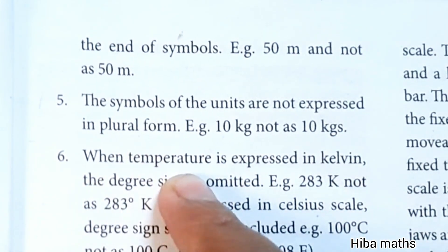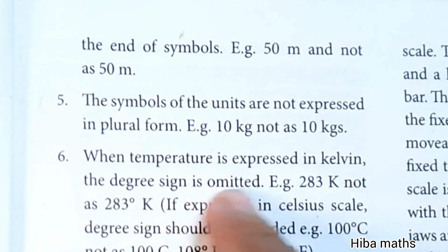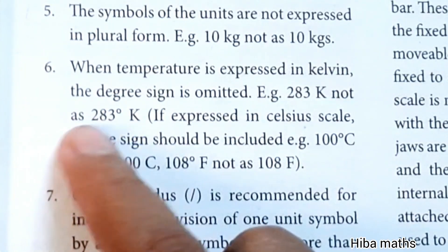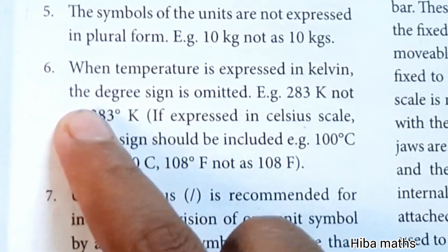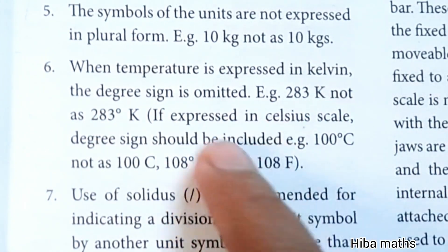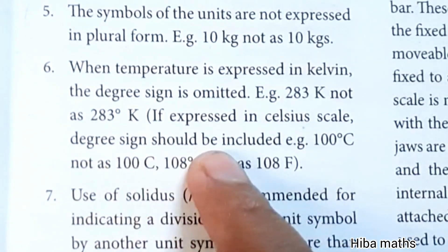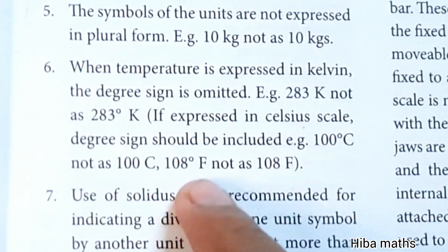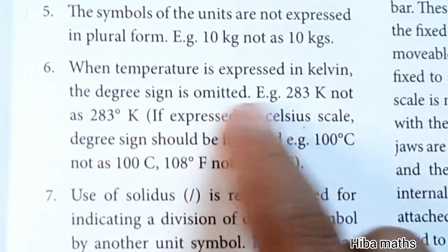Sixth point: when temperature is expressed in Kelvin, the degree sign is omitted. Kelvin is not written as 280 degree K - no degree sign is used. But if expressed in Celsius scale or Fahrenheit, the degree sign should be included. Kelvin does not use the degree sign.